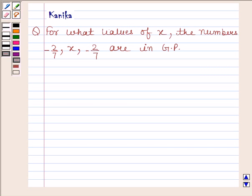Hi and welcome to the session. Let us discuss the following question: For what values of x are the numbers -2/7, x, -2/7 in GP?